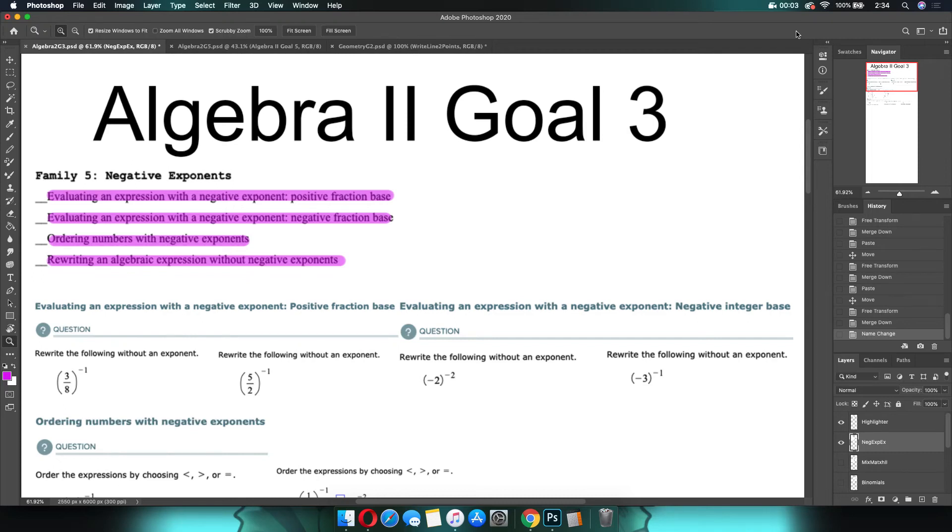Hello, ladies and gentlemen. Welcome back. This video tutorial is for students who are in Algebra 2, Goal 3. As we continue to go through Goal 3 in basically reverse order, next up is going to be Family 5. We're going to be talking about negative exponents.